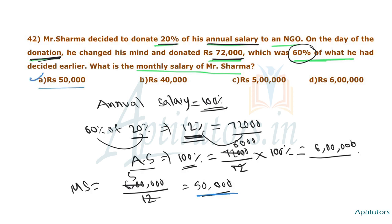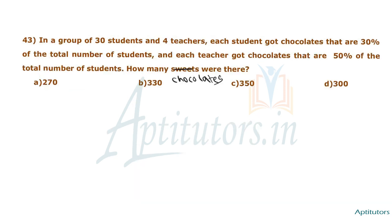In a group of 30 students and 4 teachers, each student got chocolates that are 30% of the total number of students, and each teacher got chocolates that are 50% of the total number of students. How many chocolates were there in total?